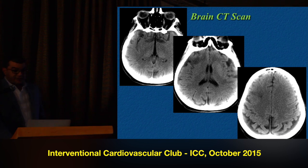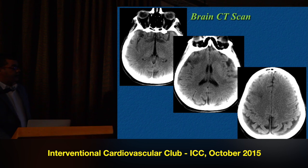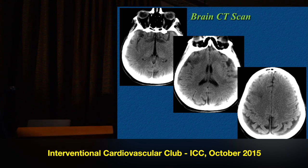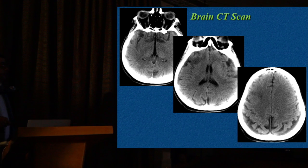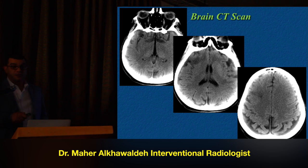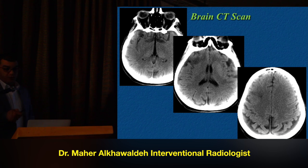This is the CT scan showing that we don't have any bleeding in the acute phase, and we don't have any signs of ischemia in the first hours. This is a good thing — a good sign — because we need this mismatch, because that means we still have an ischemic penumbra, which will be resolved and we will talk about later.